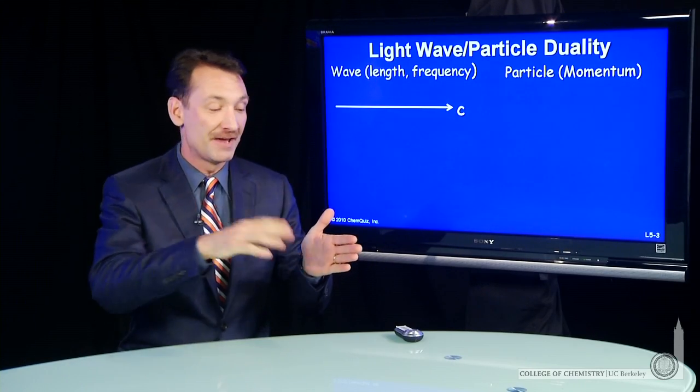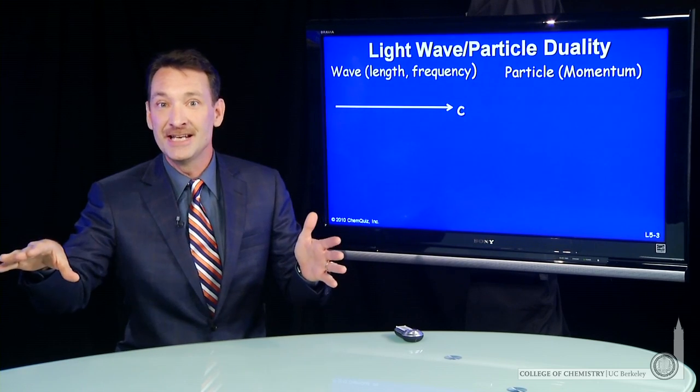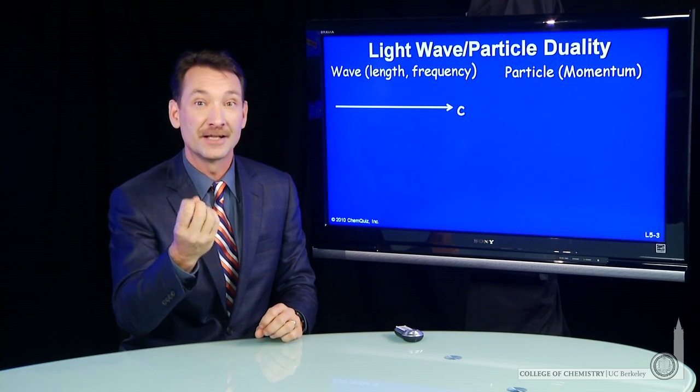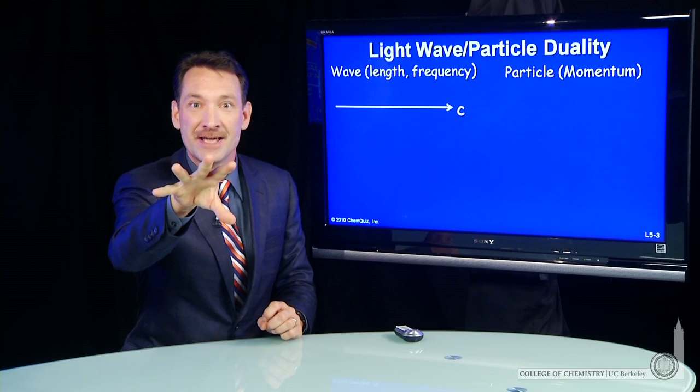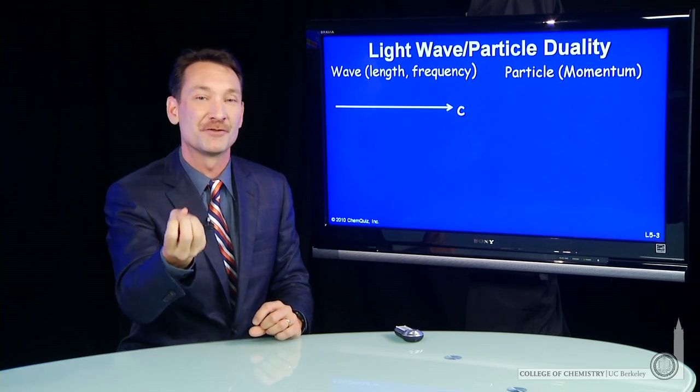We understand light as behaving like a wave, like on the ocean, with a wavelength and a speed, but also like a particle, a little packet of energy. And the energy amount is h times nu, Planck's constant times the frequency of the light.